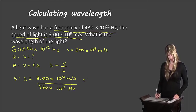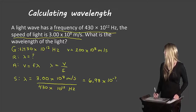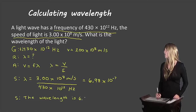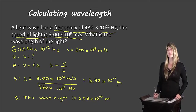If we do that math, we get lambda equals 6.98 times 10 to the minus 7. The last S stands for sentence. The wavelength is 6.98 times 10 to the minus 7 meters. Make sure you're including your units in all steps — meters per second and hertz in the working, and meters in your final answer.